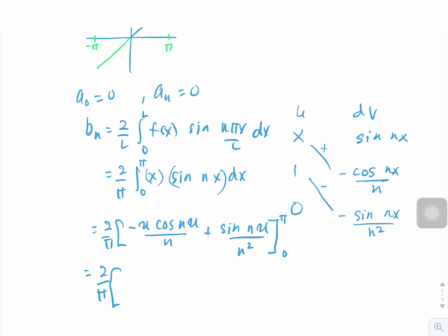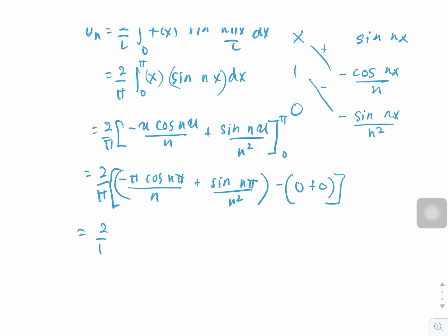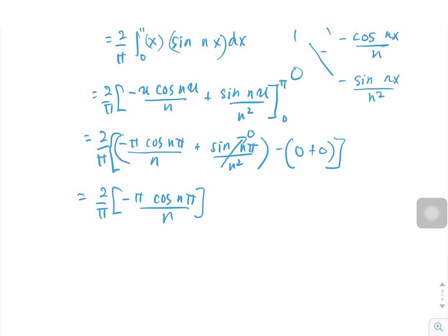Substituting π: we get −π cos(nπ)/n + sin(nπ)/n². Substituting 0: both terms vanish. Since sin(nπ) equals zero, the only remaining term is −π cos(nπ)/n. Using cos(nπ) = (−1)ⁿ, and after multiplying by 2/π, the π cancels and we get bₙ = −2(−1)ⁿ/n.